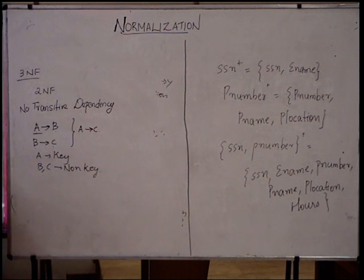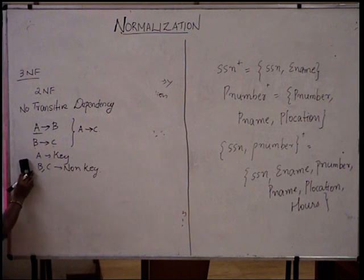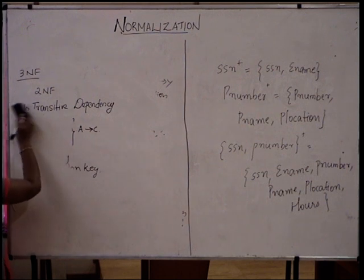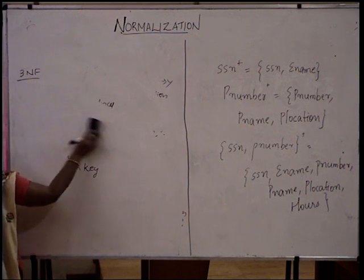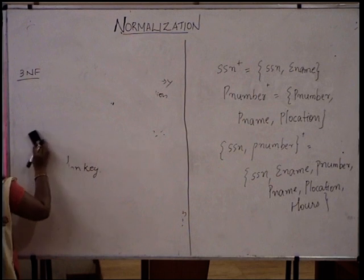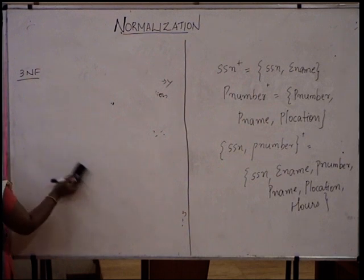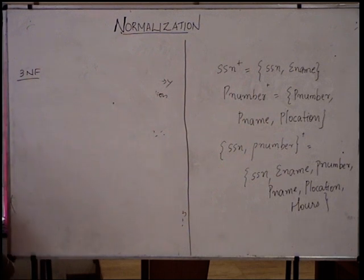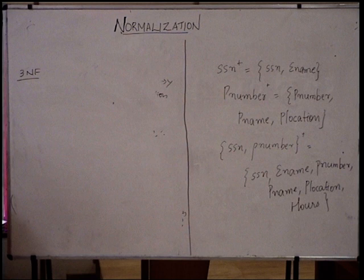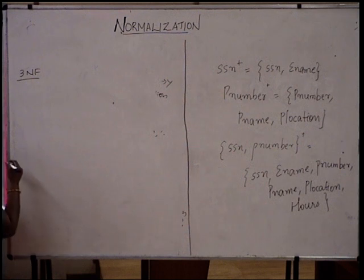If we have this transitive dependency in a table, the table is not in third normal form. We must remove the transitive dependency so that we can make the table in third normal form.